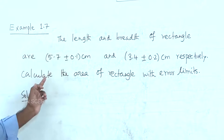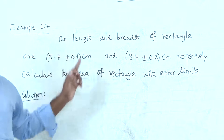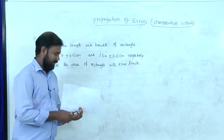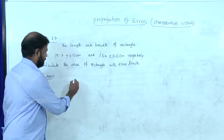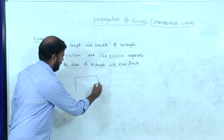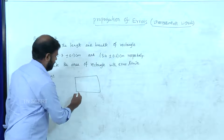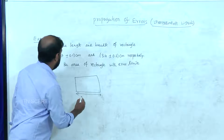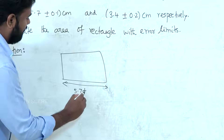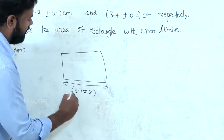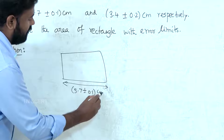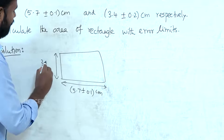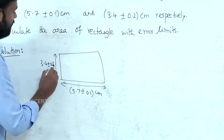This is the rectangle. Calculate the value of the product of two quantities. The rectangle has dimensions 3.7 plus or minus 0.1 cm and 3.4 plus or minus 0.2 cm.